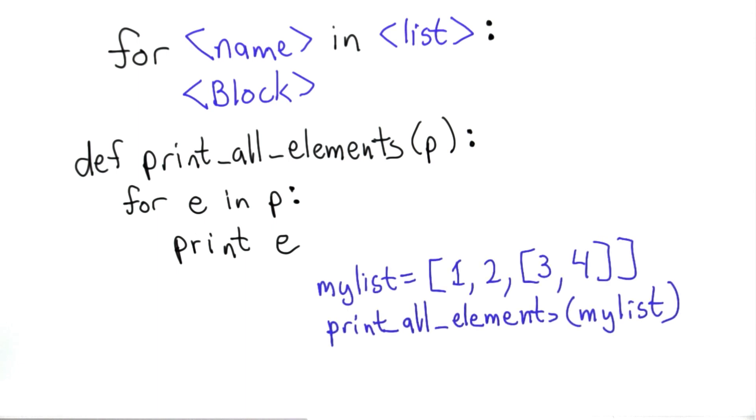So let's step through what happens when we use the for loop, calling print_all_elements, passing in the list we've defined and stored in the variable myList. This is a list with three elements. The first two are numbers, 1 and 2, and the third is the list [3, 4]. So when we created myList, that created a list object that looks like this. It has the three elements, numbers in the first two, and the list [3, 4] in the third one.